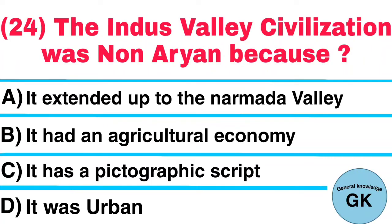Question number 24. The Indus Valley civilization was non-Aryan because: A. It extended up to the Narmada Valley, B. It had an agricultural economy, C. It has a pictographic script, D. It was urban. Answer: It was urban.